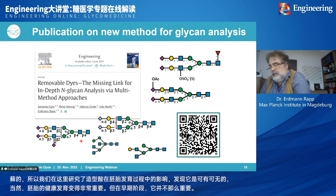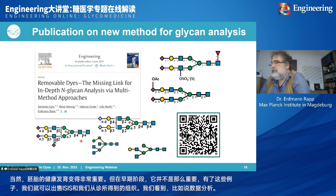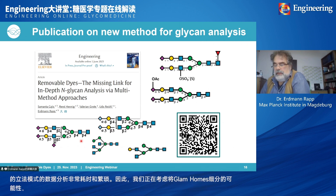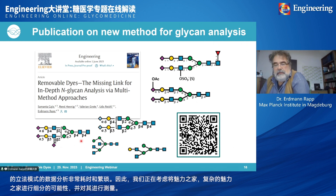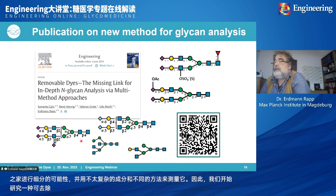From these examples using cell lysates and tissues from clinics, we saw that data analysis of very complex glycosylation patterns is very time-consuming and tedious. Therefore we started thinking about the possibility to fractionate complex glycomes and measure them in less complex compositions using different methods. We started research on a removable dye, which we think is the missing link for in-depth glycan analysis via multi-method approaches.